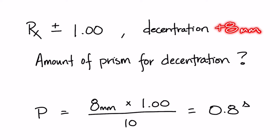Since we don't need the power sign in Prentiss rule, we'll talk about whether the lens is minus or plus power after we go through the calculations. We'll need that to determine the base direction.